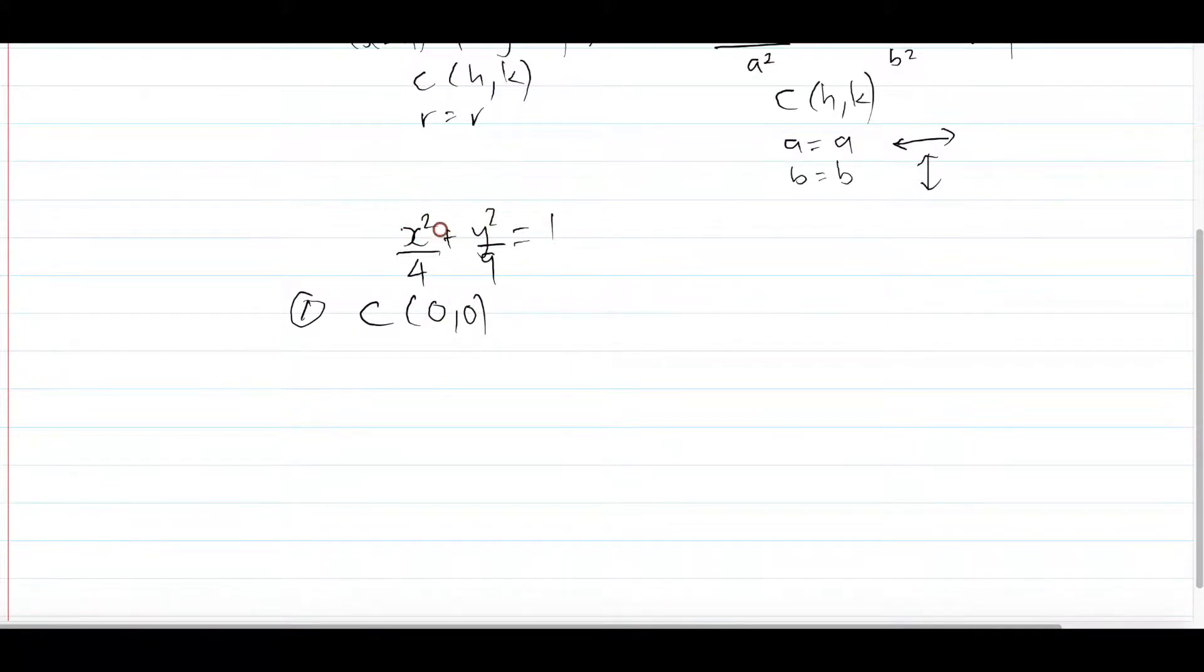And then you also find your a value, which in this case, a is always under x. So in this case you square root 4, because this number is your a², not a. So you square root 4, you get 2, and of course the b value is you square root 9, and in this case you'll get 3. So that is step number 1: you get your center, you get your a value, and you get your b value.